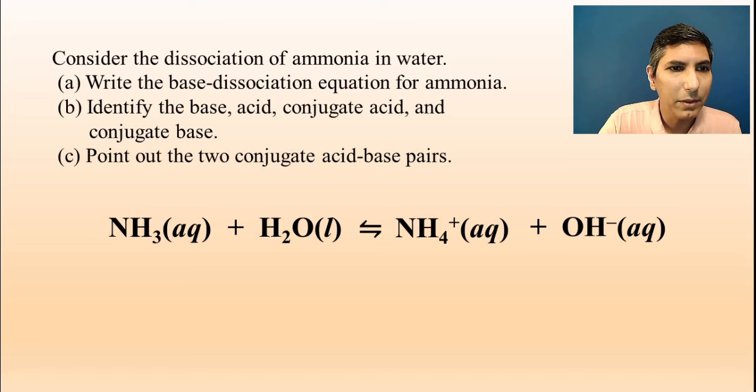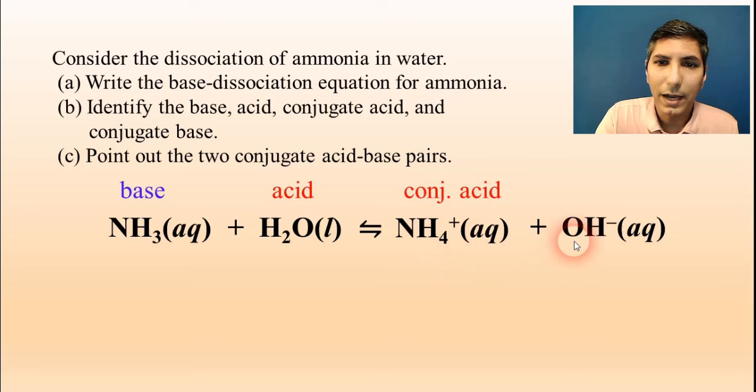So let's identify the base. Well, in part B, that's the base, which means that water has to be the acid. And in the other direction here, we can see that this ammonium is donating the H plus to hydroxide if you're going in the opposite direction. So ammonium would be the conjugate acid, and hydroxide would have to be the conjugate base. So there we have part B.